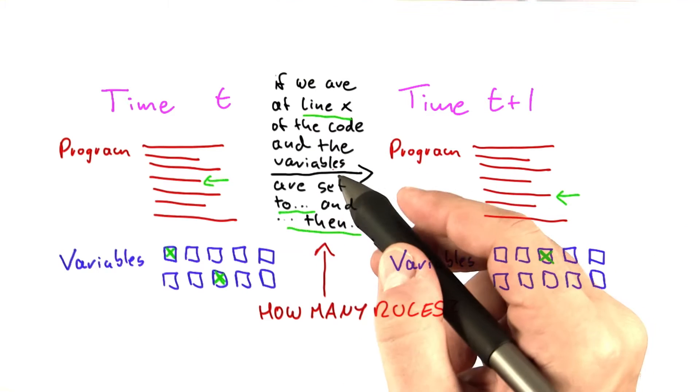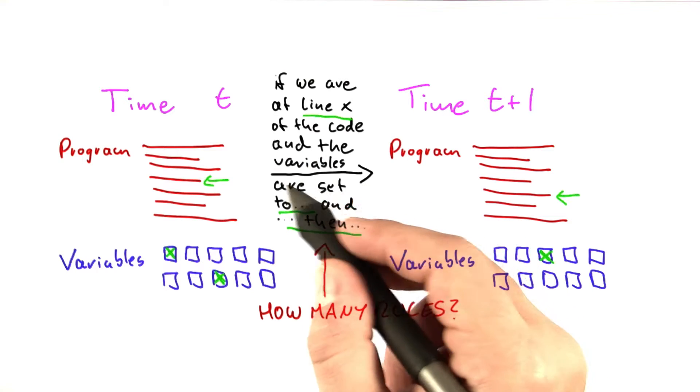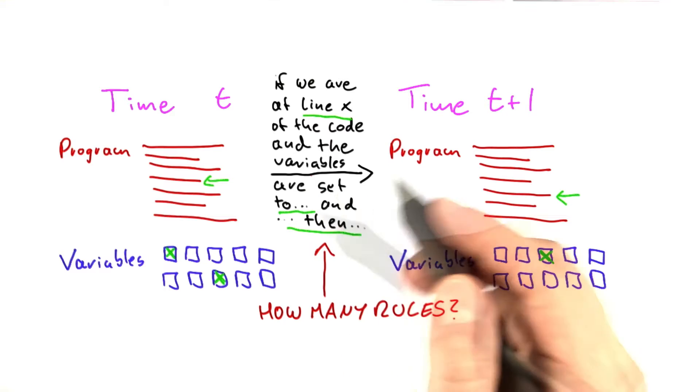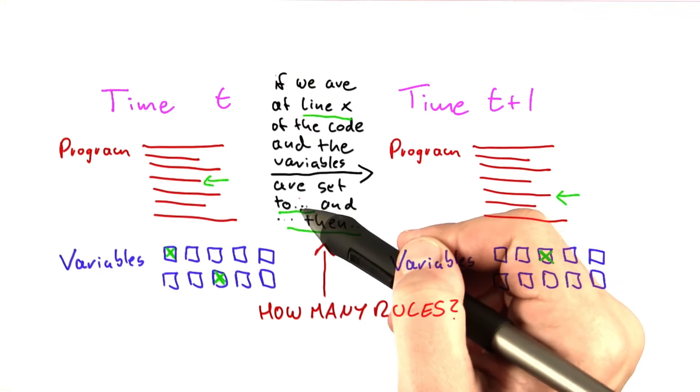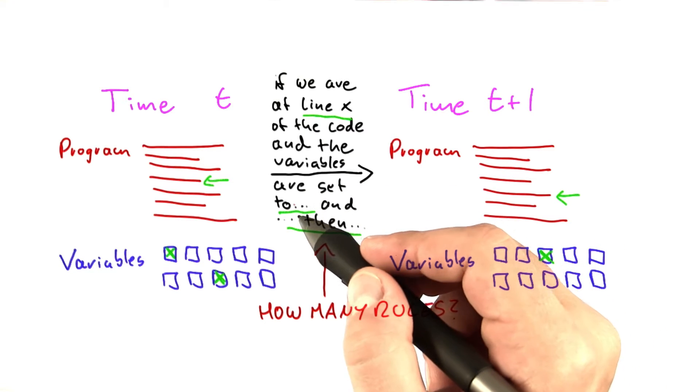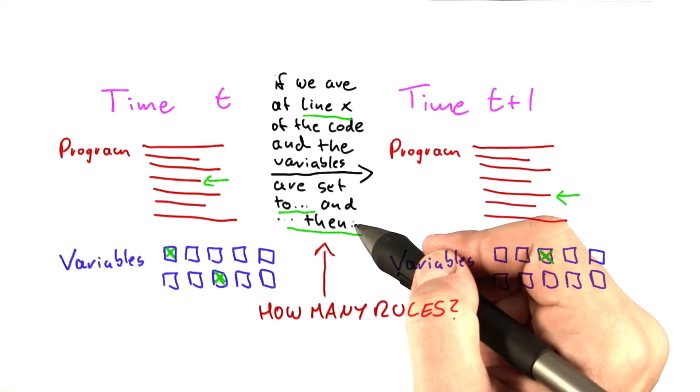So how many of these rules here are there? Well, for a single line of code, it depends on the variables here. And let's assume that one line of code uses a maximum of three variables. If you were to count how many of these rules there are, it's the number of different values that one variable can take times the number of different values that the second variable can take times the number of values that the third variable can take.